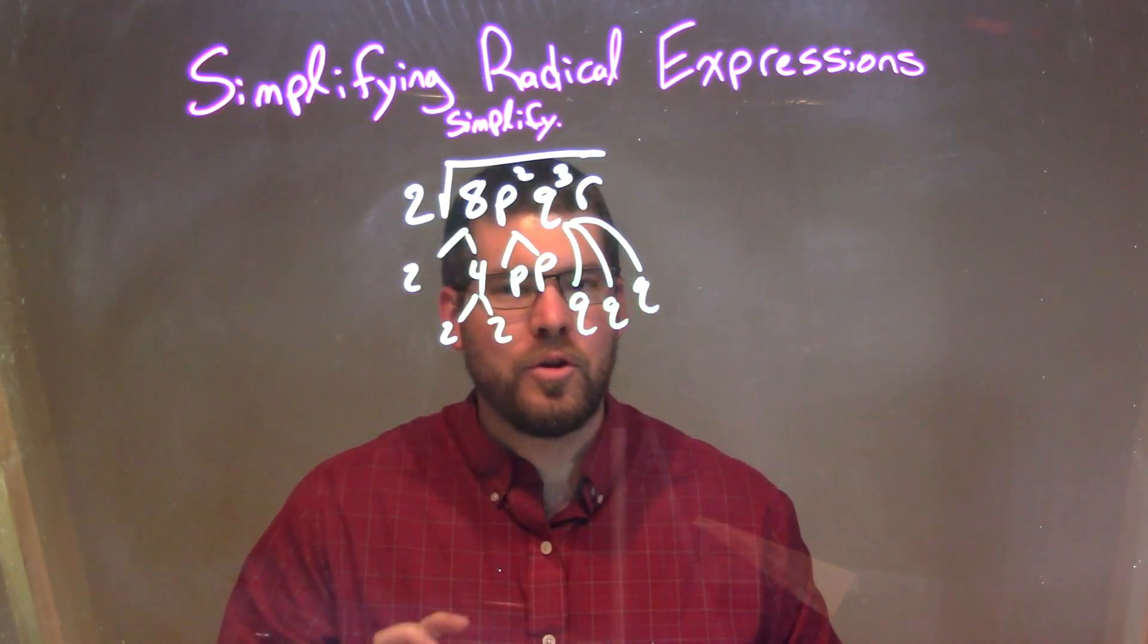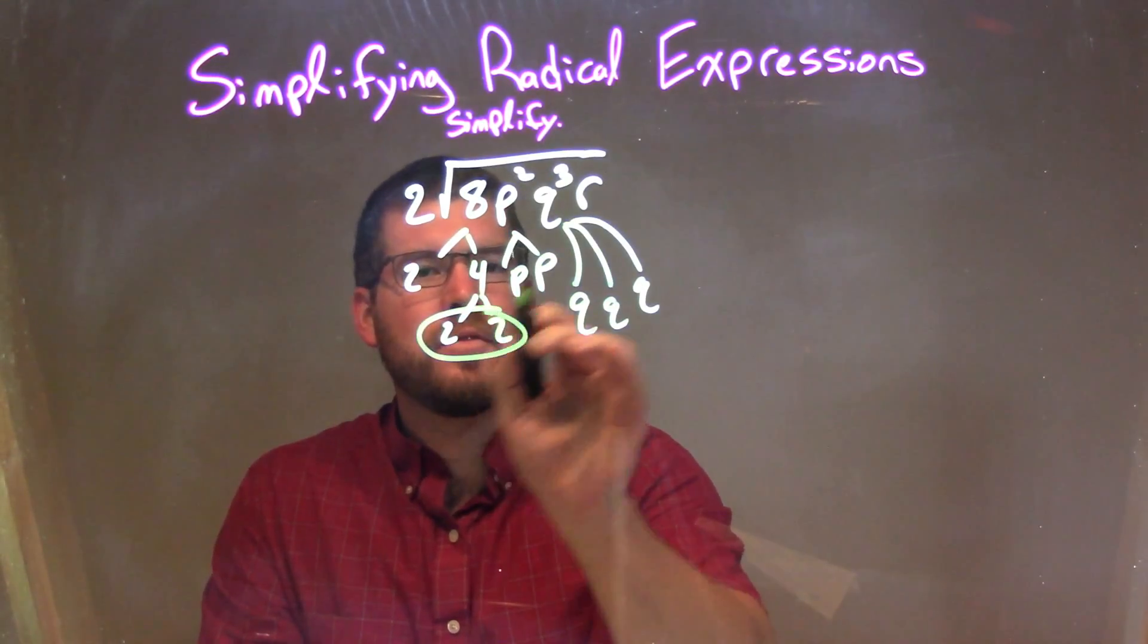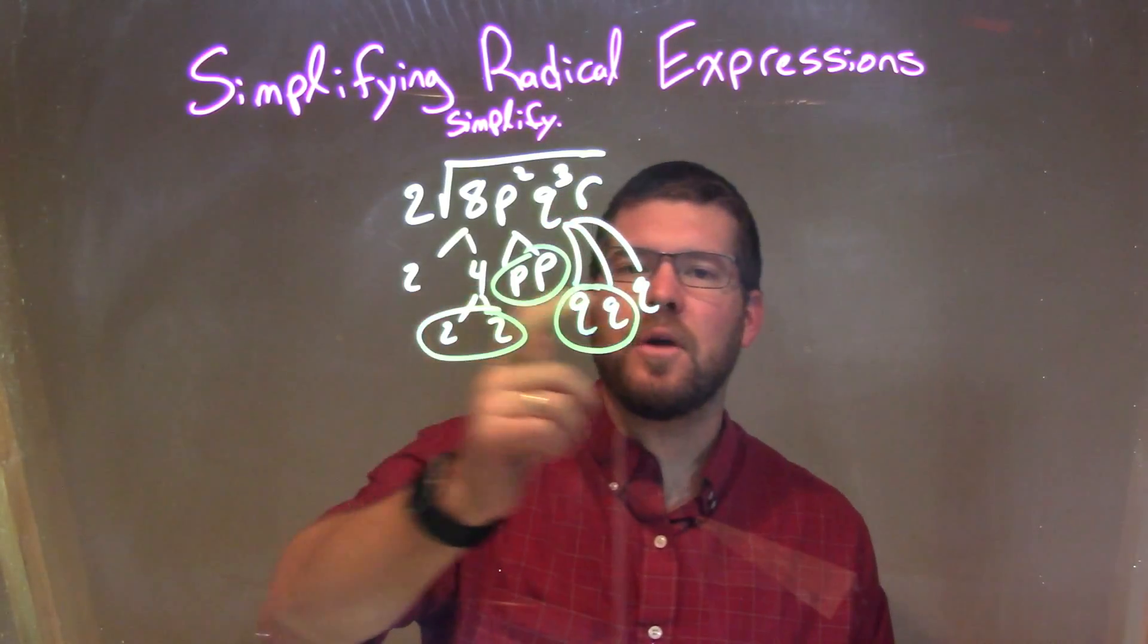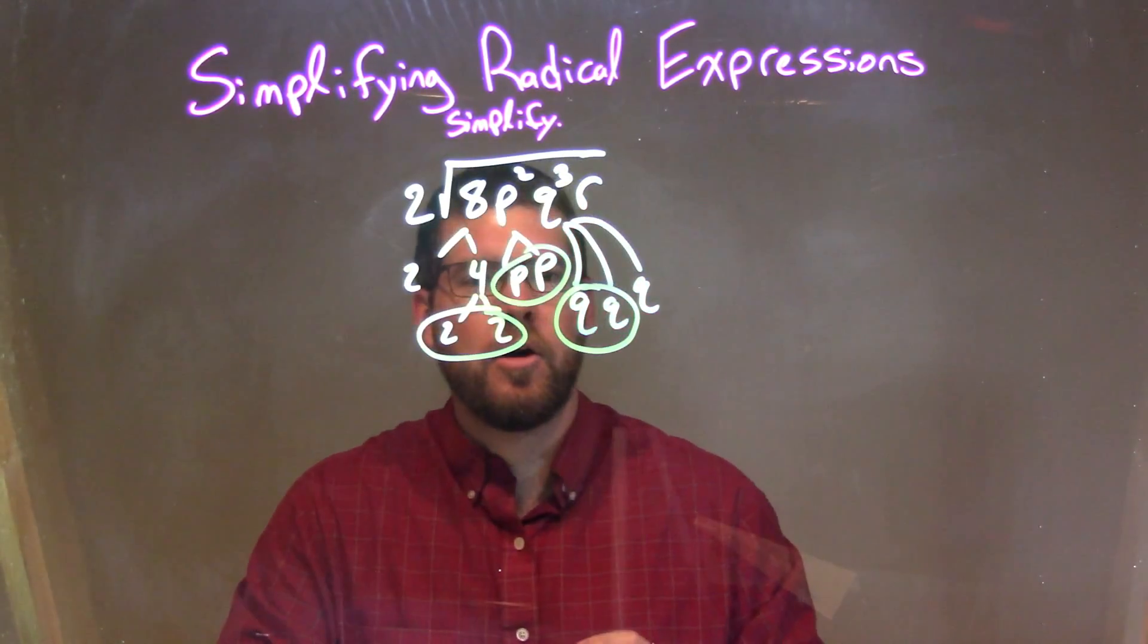Now we're going to circle our pairs. A pair of 2s, a pair of p's, and a pair of q's. What's left is a 2, a q, and an r. Don't forget that r.